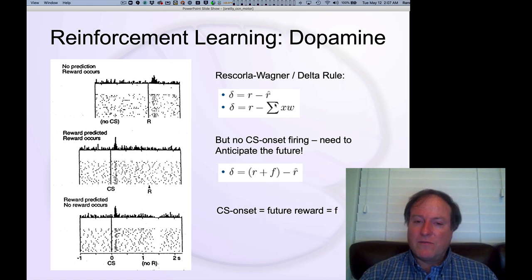So what Sutton and Barto did is introduced just one additional term to this overall equation, and that is this F. And F is the future. So it allows for the system to anticipate future rewards, which is exactly what's happening here when this conditioned stimulus is going off. That's telling you something not about what's happening right now, really. It's just a tone. Who cares? It tells you about what's going to happen in the future, this reward.